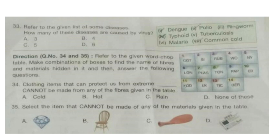Question 35. Select the item that cannot be made of any of the materials given in the table. Now look at the word chop table. Newspaper is made from paper, which is present there. Balloon is made from rubber, which is present. Chair is made of plastic, which is present in the table. Only option A — diamond — is not present. So the answer will be option A.